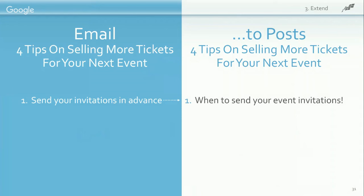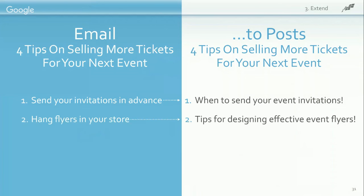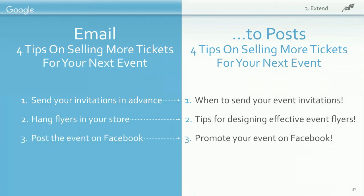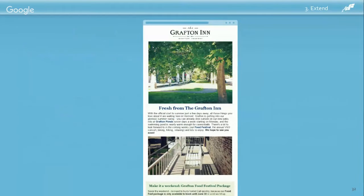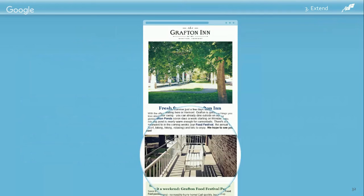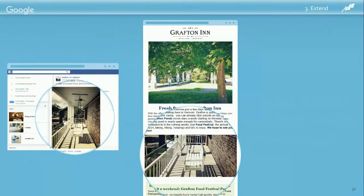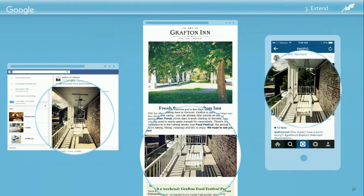The tip on sending invitations in advance could become a Facebook post about when to send event invitations. Hanging flyers could be turned into an infographic on effective flyer design shared across all your social networks. Advice to post events on Facebook could expand to a blog post on promoting events that you share everywhere. A tip about VIP pricing could be repurposed into five tweets spread across a week. Here's an example: the Grafton Inn in Vermont used a porch swing image in their email announcing summer activities, repurposed it on Facebook to show their weekly schedule, and shared it on Instagram with a cute caption.